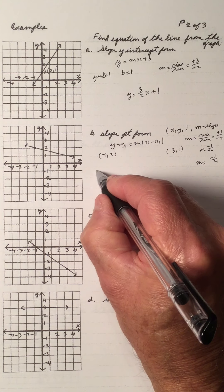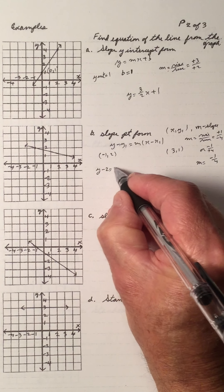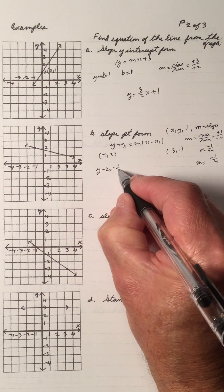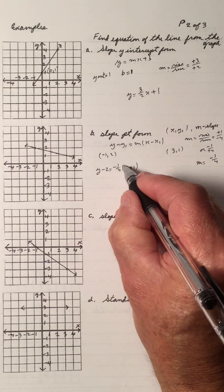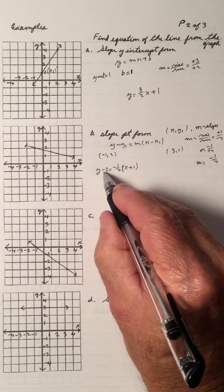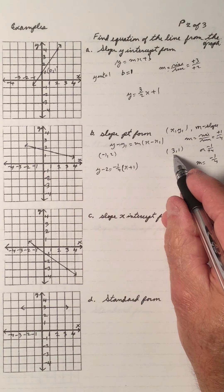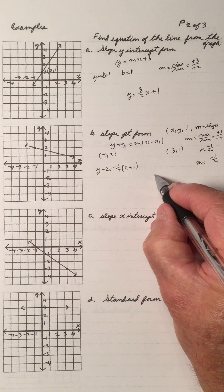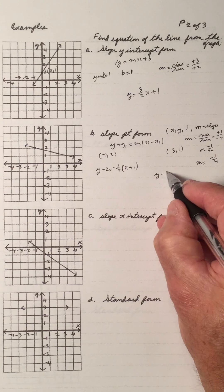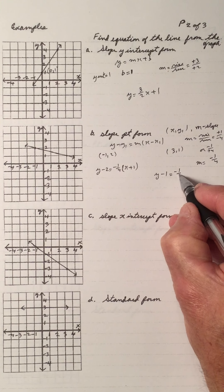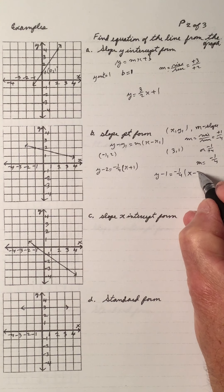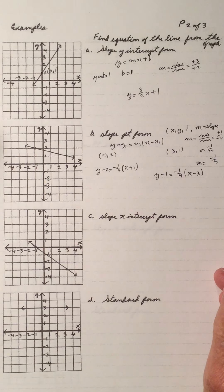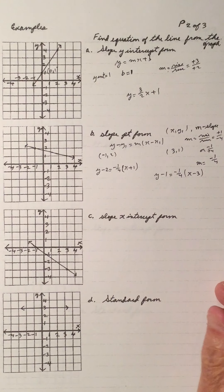So the point slope form is y minus 2 equals negative 1 quarter times x plus 1. If I use the other point, I'll go y minus 1 equals negative 1 quarter times x minus 3. So either equation will do.